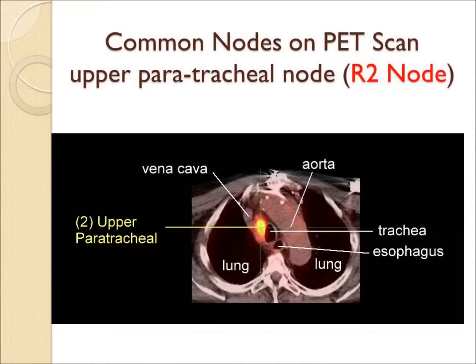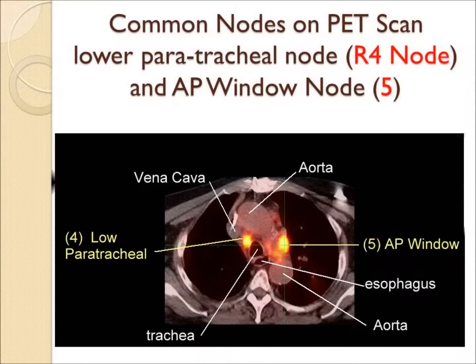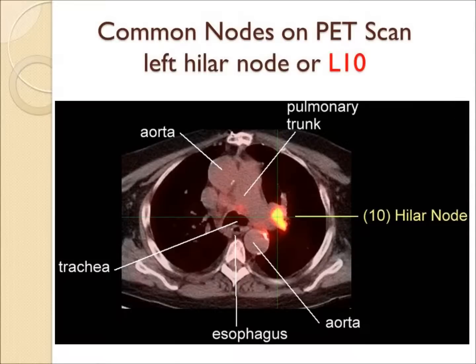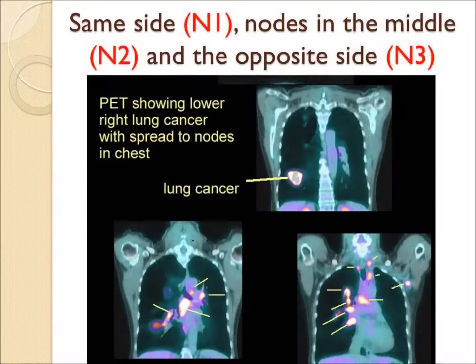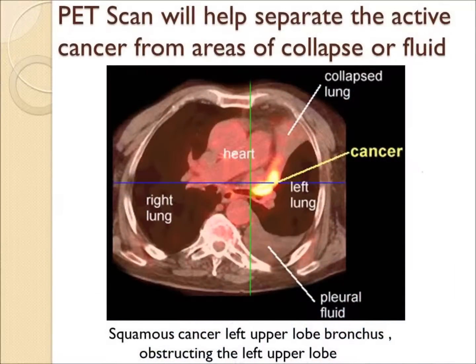PET scans are very helpful in identifying and locating lymph nodes in the mediastinum of the chest, and are very useful in the proper staging and treatment of lung cancer patients. A PET scan also will separate cancer from collapsed lung, pleural fluid, or other benign structures in the chest, which is very helpful for the radiation oncologist in targeting the cancer.